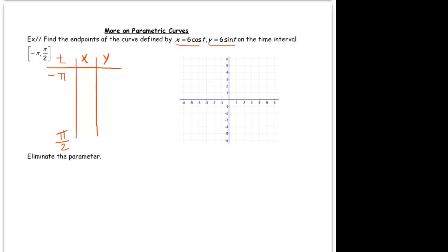So when you plug in negative pi in for t, you get for the x coordinate, 6 times cosine of negative pi. The cosine of negative pi is negative 1, so it's 6 times negative 1 which is negative 6. When you plug in negative pi in for t in the y equation, you get 6 times sine of negative pi. And the sine of negative pi is 0. So you get negative 6, 0.